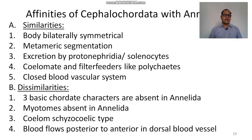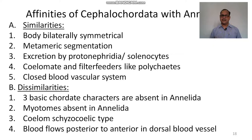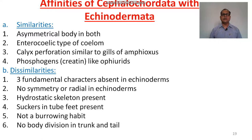Similarities with Annelida: body bilaterally symmetrical, metameric segmentation, excretion by protonephridia and solenocytes, coelomates, filter feeders like polychaetes, closed vascular system. Dissimilarities: three basic fundamental characters of Chordata are absent in Annelida; myotomes absent in Annelida; coelome of schizocoelomic type; blood flows posterior to anterior in the dorsal blood vessel.